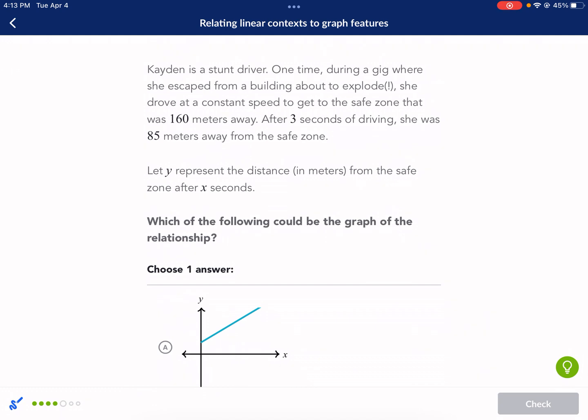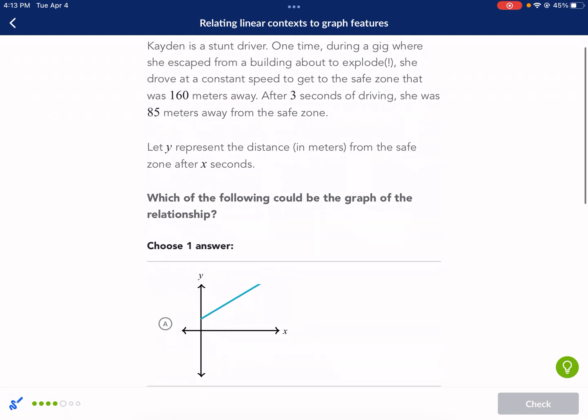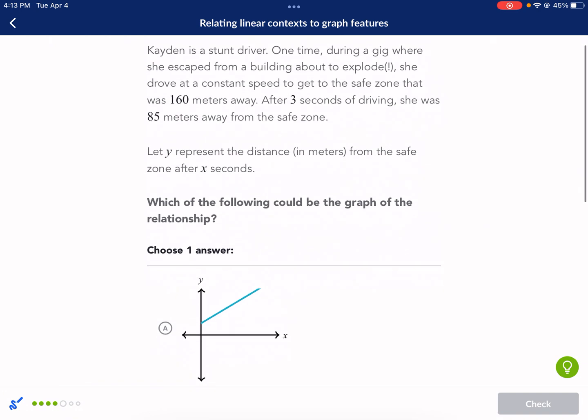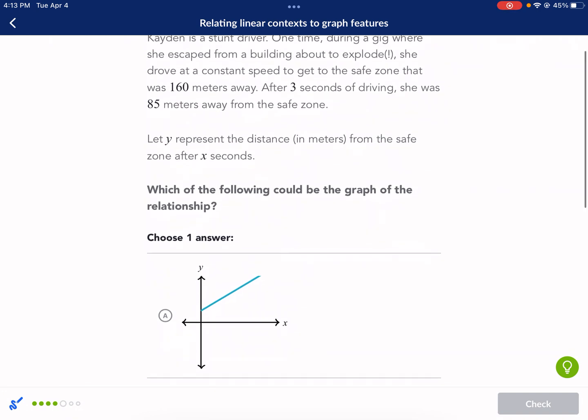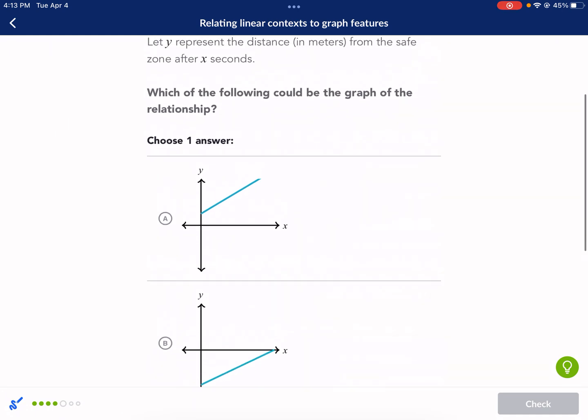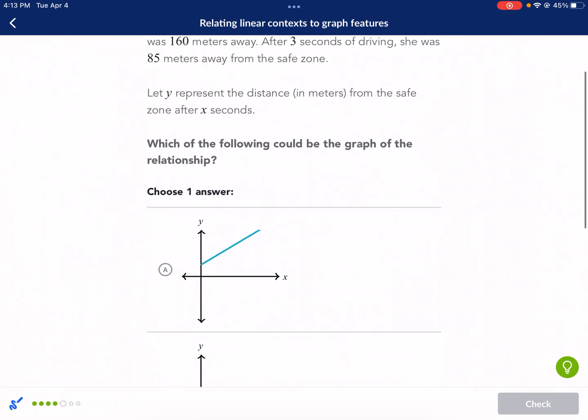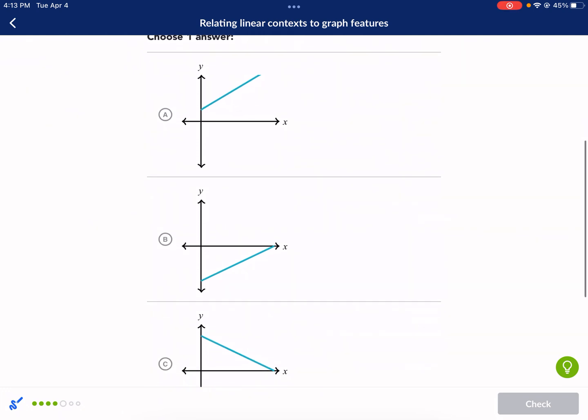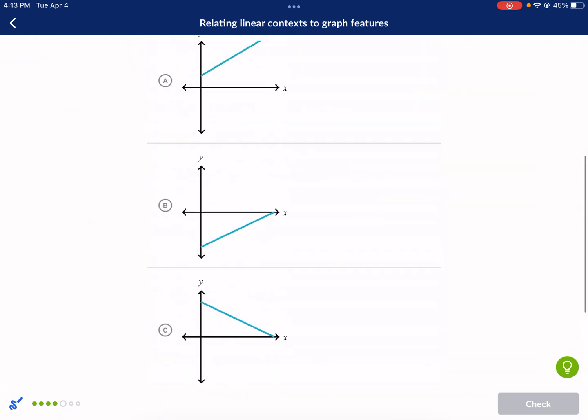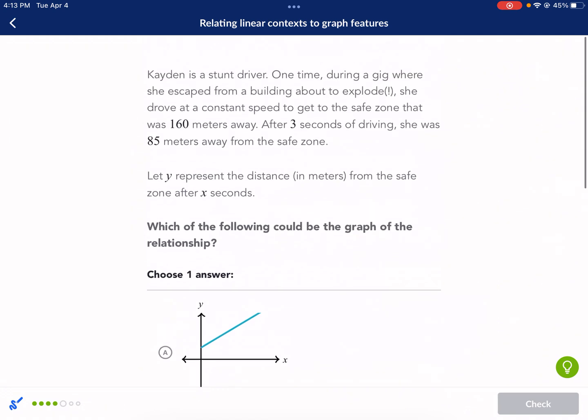Caden is a stunt driver. One time during a gig where she escaped from a building about to explode, she drove at a constant speed to get to the safe zone that was 160 meters away. After three seconds of driving, she was 85 meters away from the safety zone. Let Y represent the distance in meters from the safe zone, and X is the seconds. Which of the following could be the graph of the relationship?